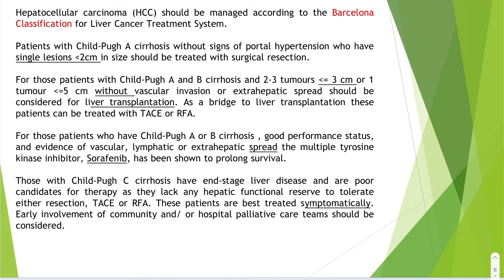In the Barcelona classification, they look at the size and number of tumors. Patients with Child-Pugh A cirrhosis, no signs of portal hypertension, and a single lesion less than two centimeters in size should be treated with surgical resection.